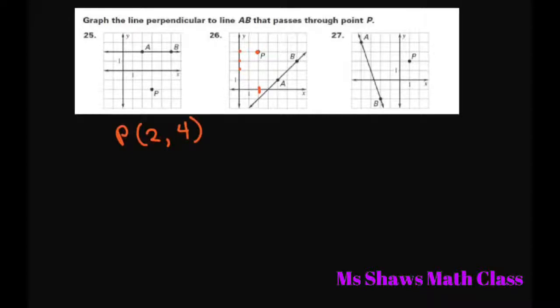Now let's find the slope of AB. And the slope of AB is just 1. So we can write that in fraction form. So the perpendicular slope is the negative reciprocal, which is going to be negative 1 over 1 or just negative 1.